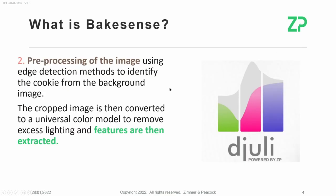There in the cloud, pre-processing of the image uses edge detection methods to identify the cookie from the background. The image is then converted to a universal color model to remove excess lighting, and features are then extracted.